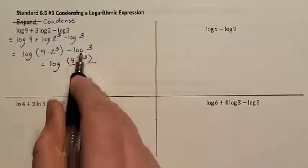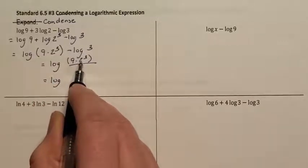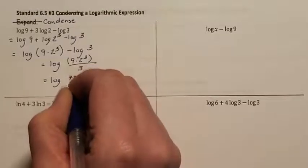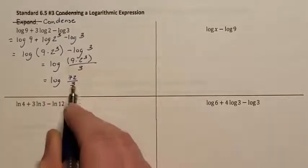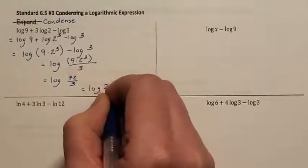Now I want to see if I can simplify this. So I have log of 9 times 2 to the third power is 8. So 9 times 8 is 72. I have 72 divided by 3. 72 divided by 3 is 24. So this is log of 24.